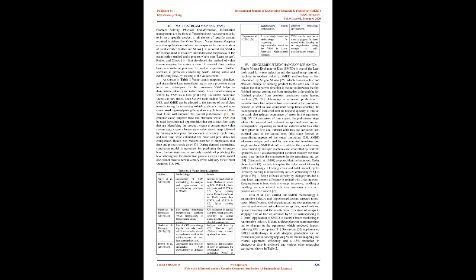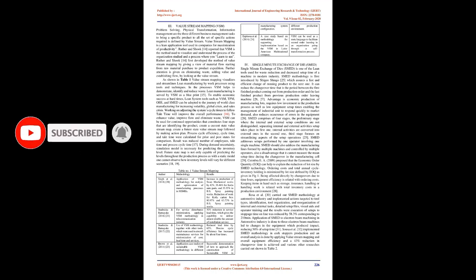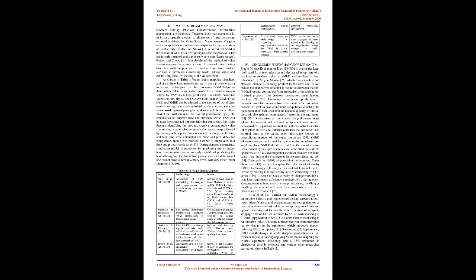These lean manufacturing applications help in the improvement of productivity. Transformation of the traditional assembly line to a lean one is a good solution to improve efficiency, effectiveness, and profitability. Value stream mapping: problem solving, physical transformation, and information management are the three different business management tasks. The set of specific actions required to bring a product to market is defined by the value stream. VSM is a lean application tool used in companies for maximization of productivity. Reuther and Shook reported that VSM is the method used to visualize and understand the process of the organization.